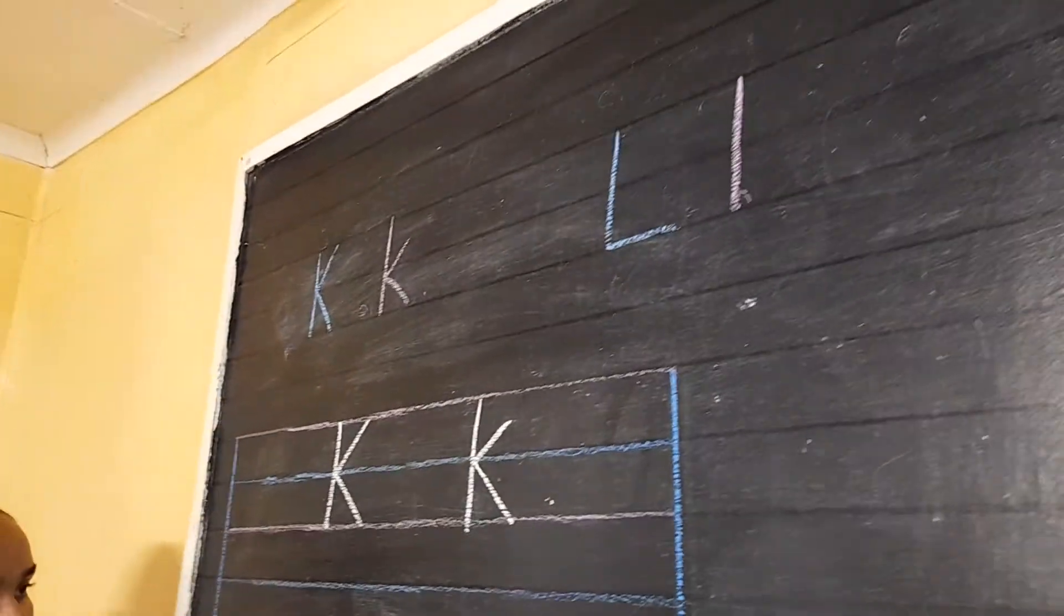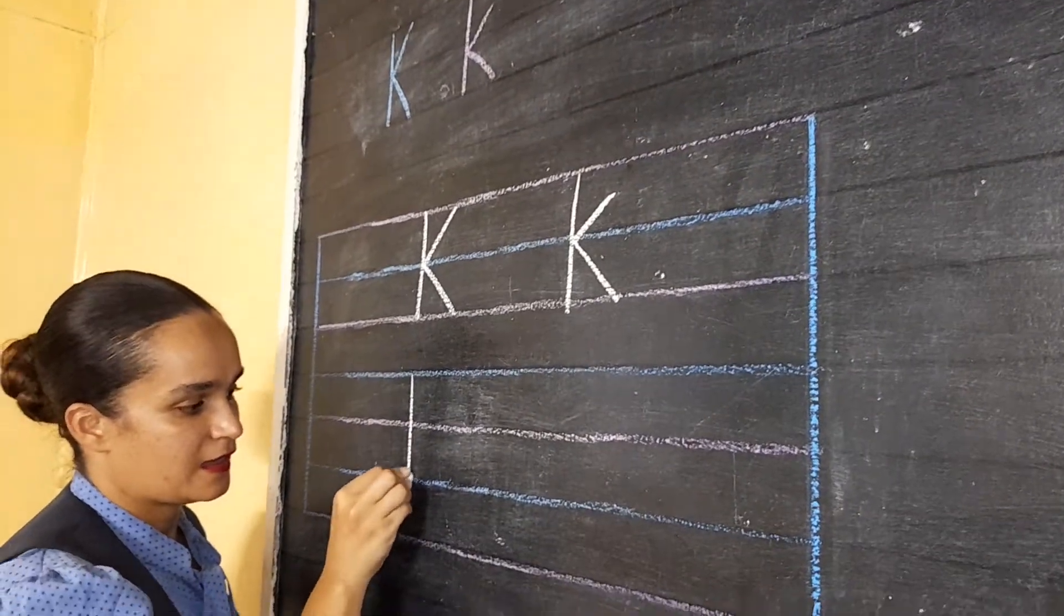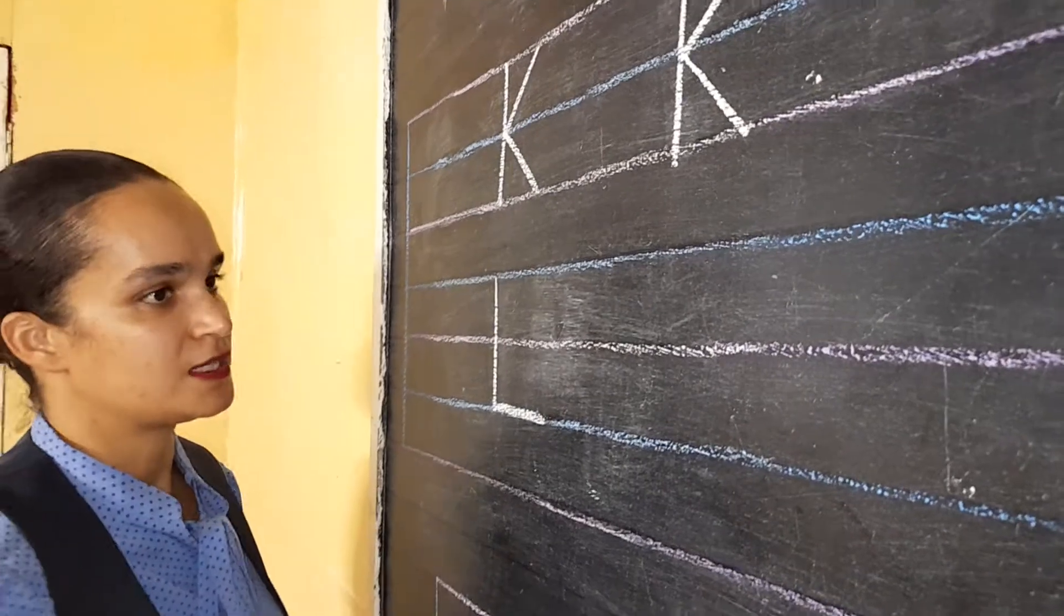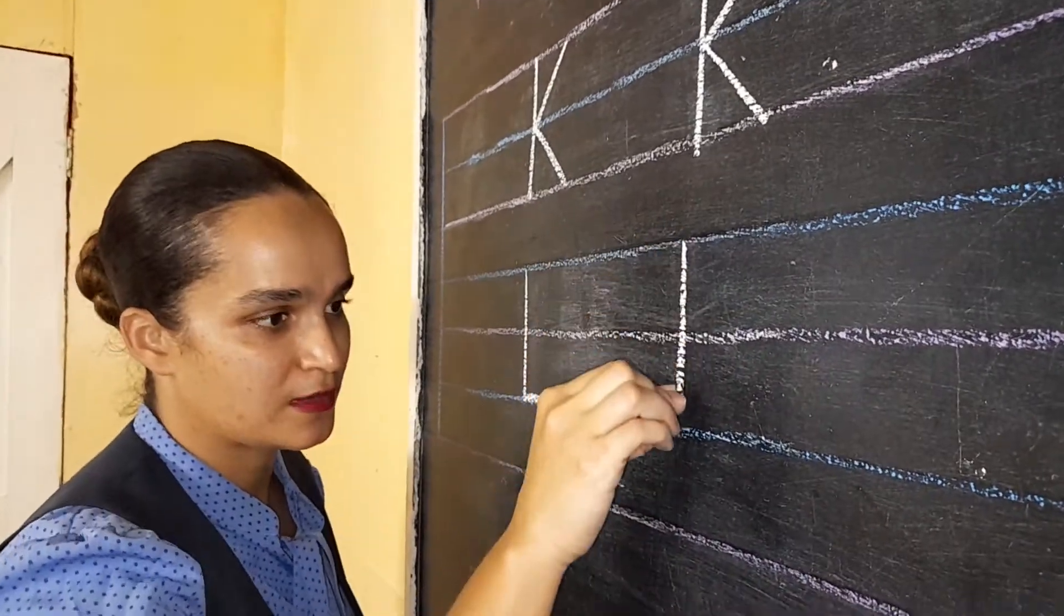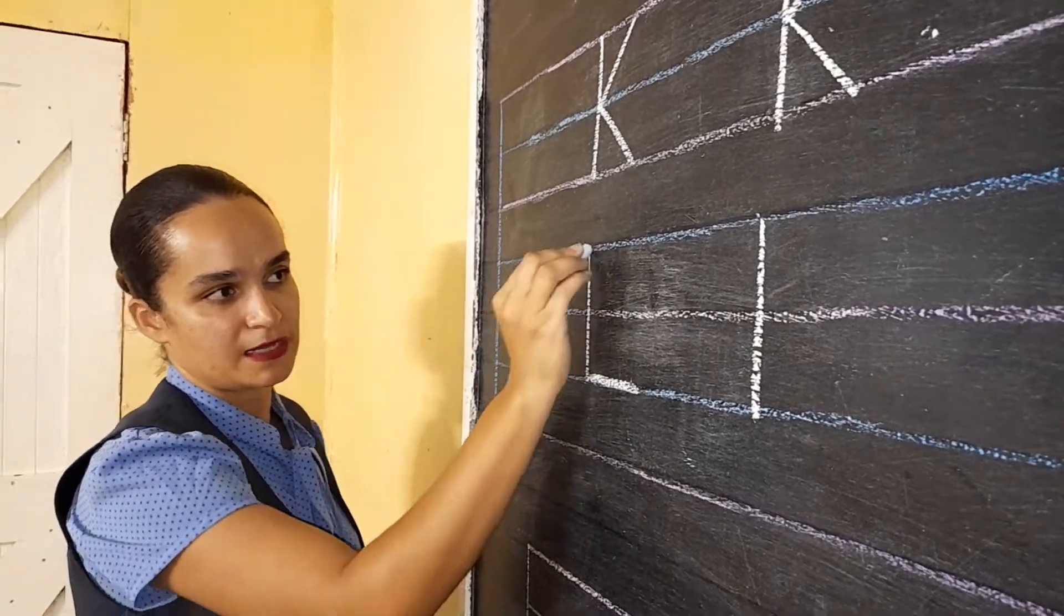Now L. Big letter L. Very easy. Straight down and across. Small letter L. Very easy. Straight down. Can you see my lines? I'm touching both lines. Can you see that?